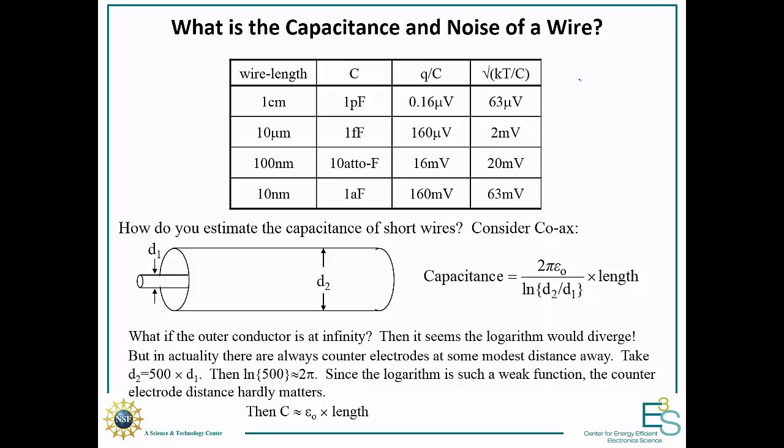Why did I say the noise on a wire is 10 millivolts? The noise is the kT over C noise. What's the capacitance of a wire? We can estimate that by considering a simple coaxial wire. Its capacitance is 2 pi epsilon naught over the natural log of the ratio of the outer diameter to the inner diameter. The key to get an estimate is to realize that this natural log varies slowly with respect to the wire diameters. If you take a reasonable ratio of say 500, this natural log is roughly 2 pi, and so our capacitance is roughly epsilon naught times the length.